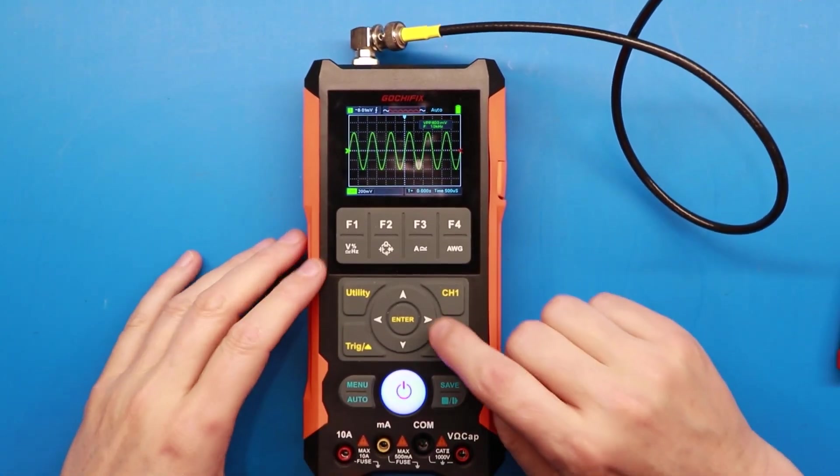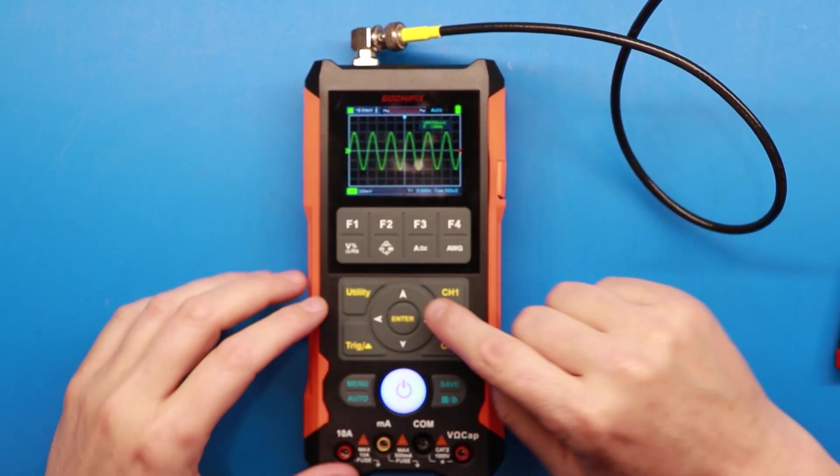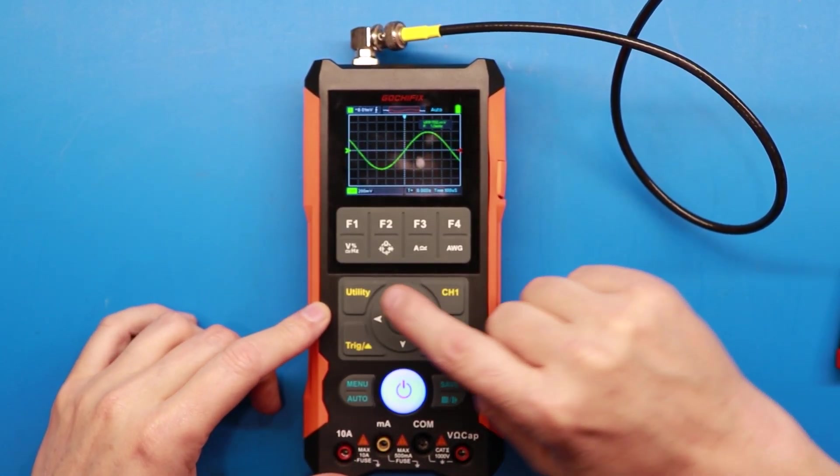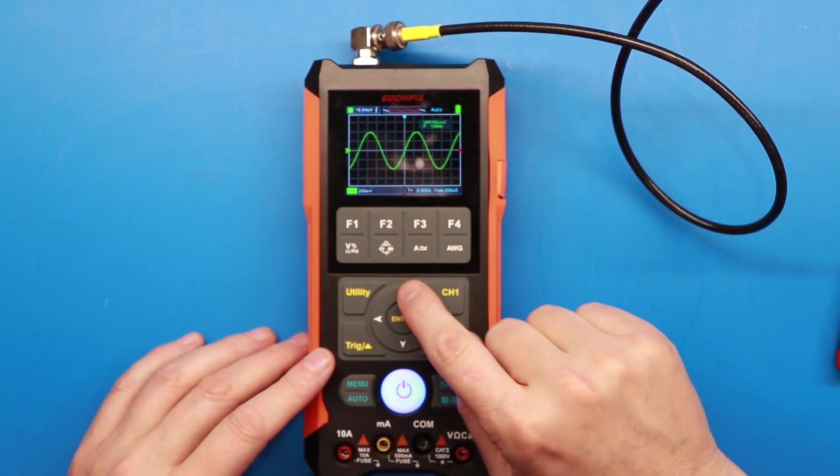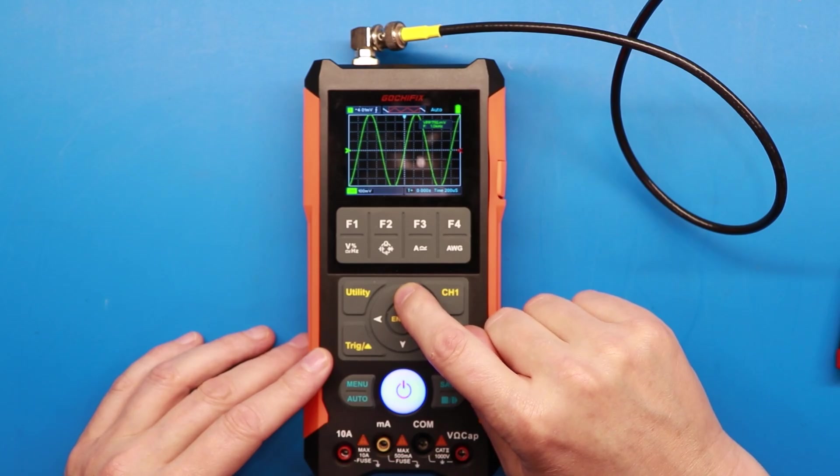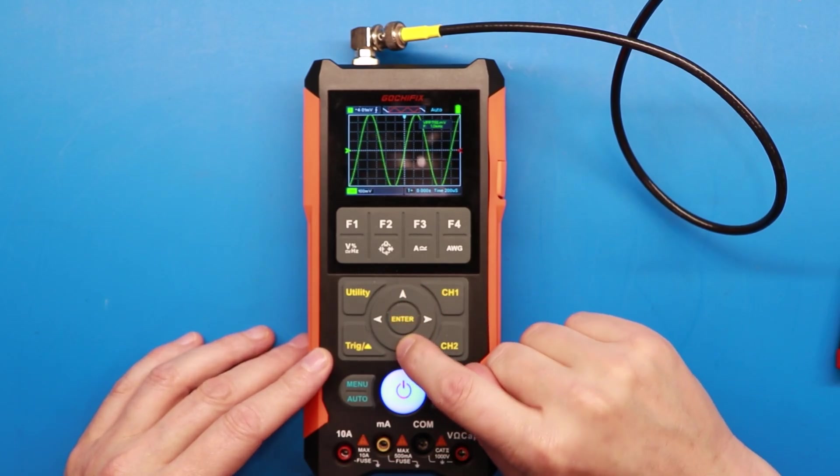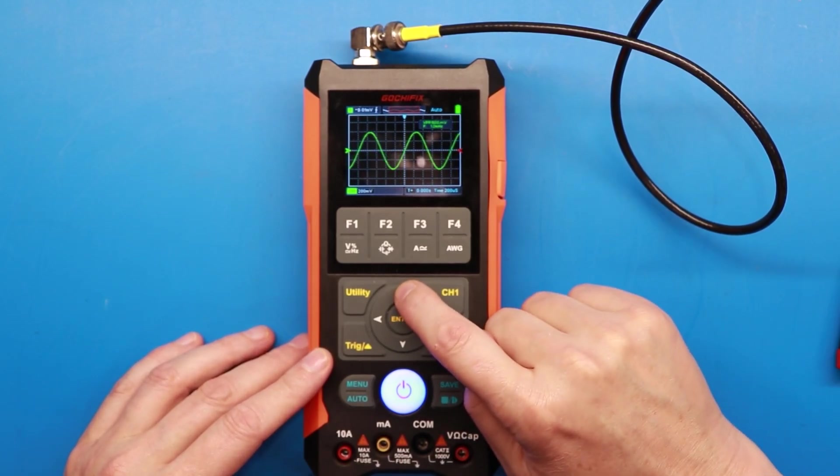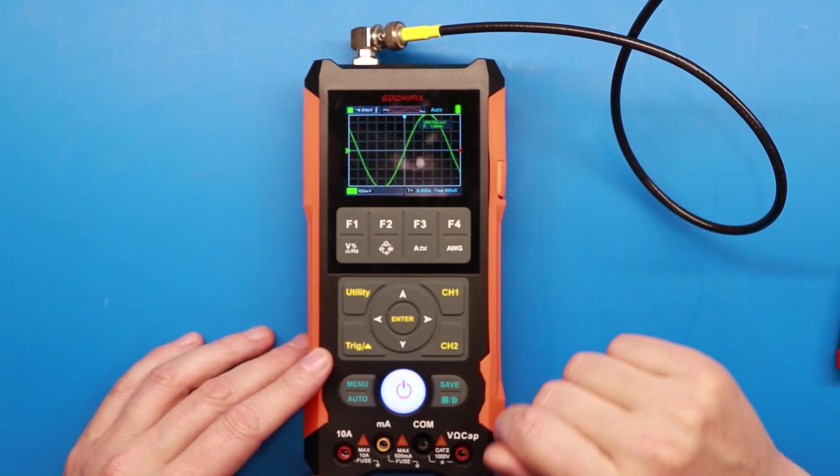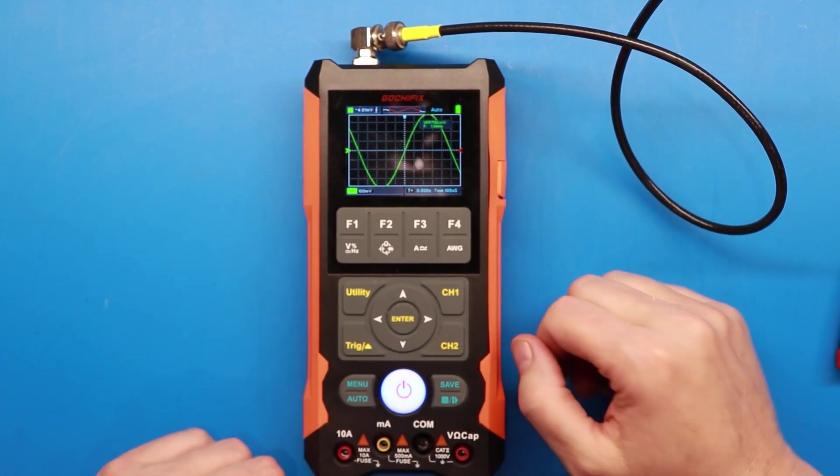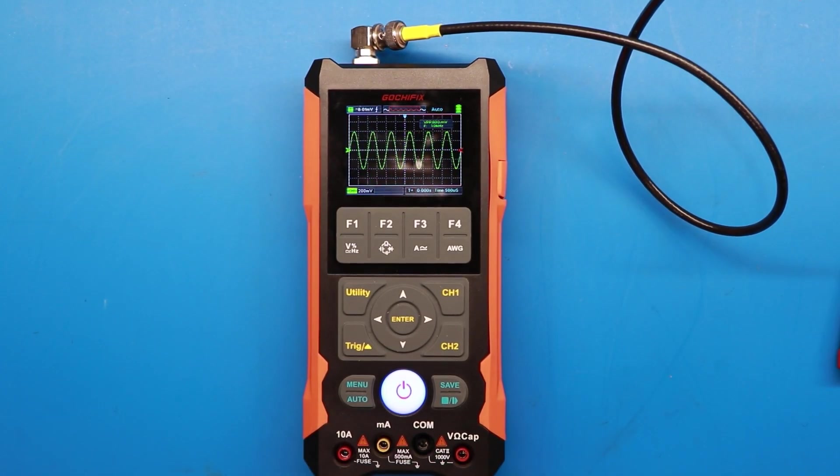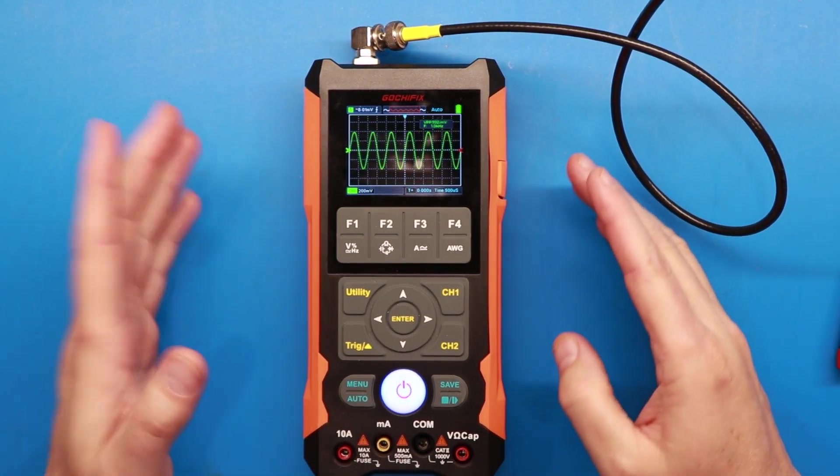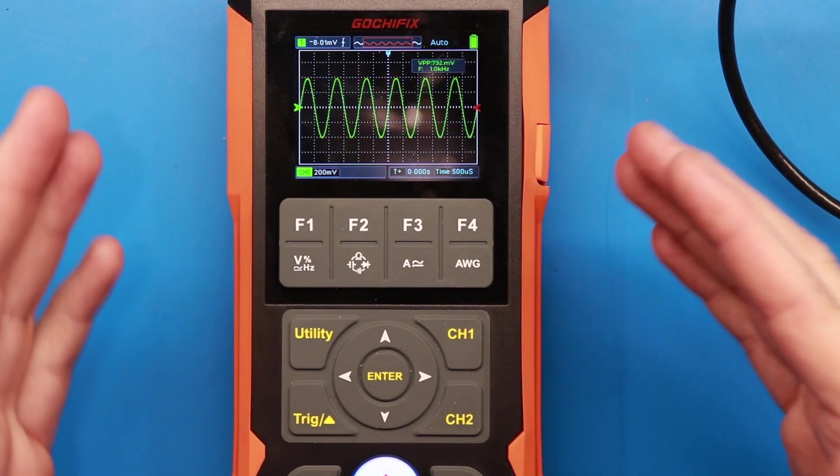Watch how easy it is to zoom in or out on your signal. The left right arrows zoom in and out on the time domain and the up and down arrows right here zoom in and out on the voltage domain. So if you really want to get in there on that signal you can. By the way if you want to go back just hit the auto button and boom it kind of zooms in appropriately. So I love it.